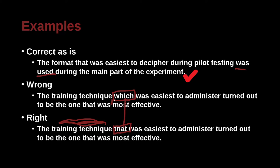So if you use 'which,' you need to have a comma. If there's no comma, you need to use 'that.' More specifically, 'that' makes it very clear that this specific thing was easiest. When you use 'which,' it is much less clear — is it this thing, or is it part of some other group?